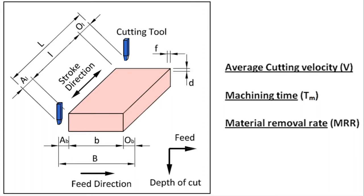We are going to see three terms: average cutting velocity represented by capital letter V, machining time represented by T suffix M, and material removal rate that is MRR. In this diagram, the workpiece is shown in pink color and the cutting tool is shown in blue color. The direction through which the cutting tool moves, corresponding to the movement of RAM, is known as the stroke direction. The total length through which the cutting tool moves in the stroke direction is capital letter L, which is the sum of approach length plus over travel length plus cutting length of the workpiece — that is OL plus L plus AL.